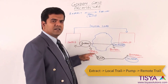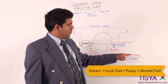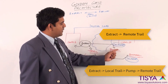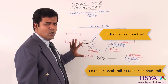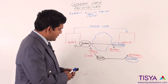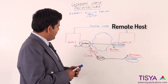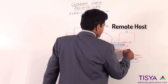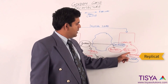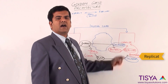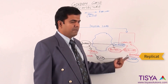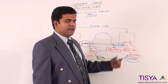The first option is where a local trail is created and then a pump is used to write it to the remote trail on the target machine. The second option is to configure the extract to directly write a remote trail on the target host. On the remote host, when we want to process the trail, we create a replicat process which reads from the trail and applies the data into the target database, based on the schema mappings and parameters specified for the extract or replicat.